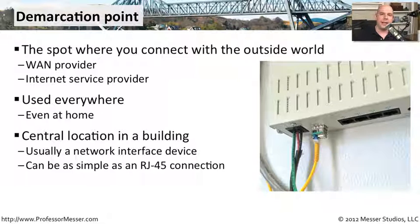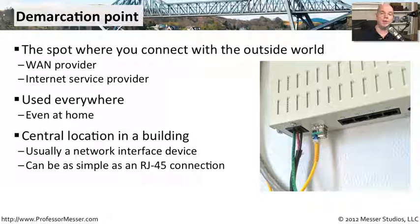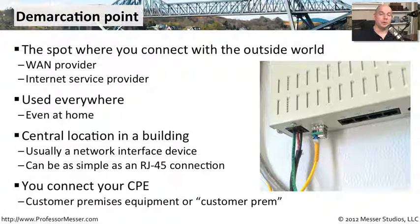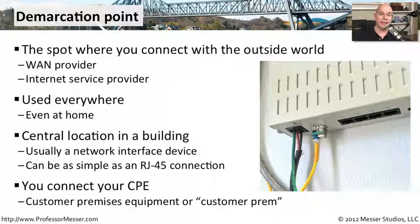Usually the DMARC is something like a single box — it may just be a box on the wall with an RJ45 connection plugged into it. It can be very simple. It might come in with fiber, and they might be providing you with a copper connection on the other side. What they're providing you is that single RJ45 connection. The wide area network provider usually refers to your equipment as the CPE, or customer premises equipment. They're responsible all the way up until that jack, and at that point it's up to you to maintain the connection from your CPE to the DMARC connection.